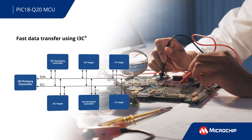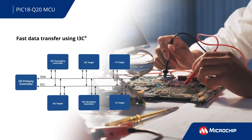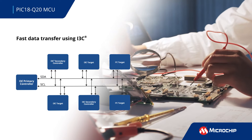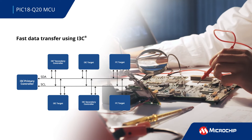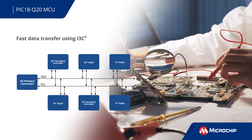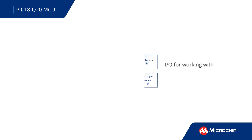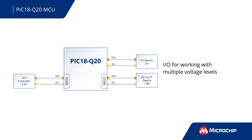The on-chip direct memory access provides fast data transfer to keep pace with the accelerated i3C transactions. The family also features a multi-voltage I/O interface that enables multiple pins to operate in different voltage domains, allowing it to work with numerous sensors and devices simultaneously without external level shifters.